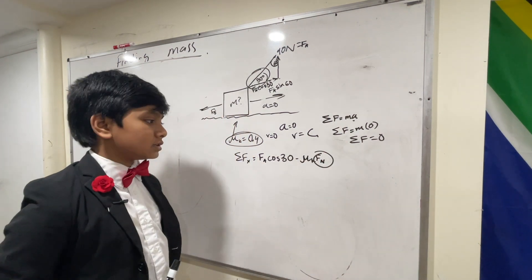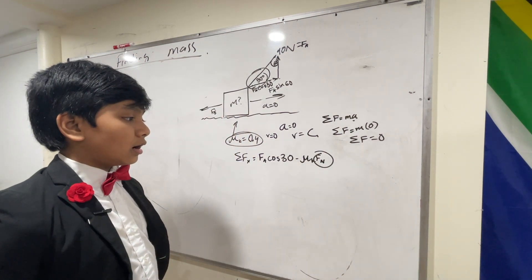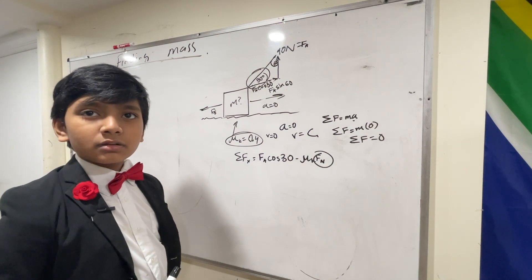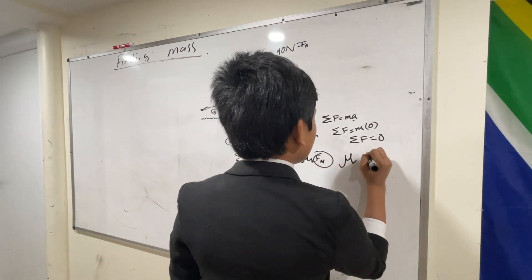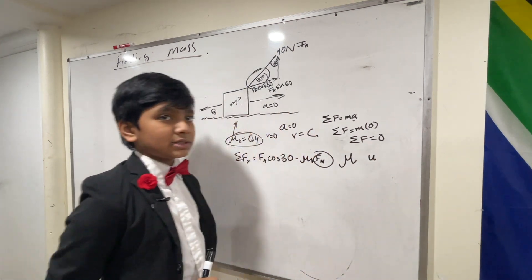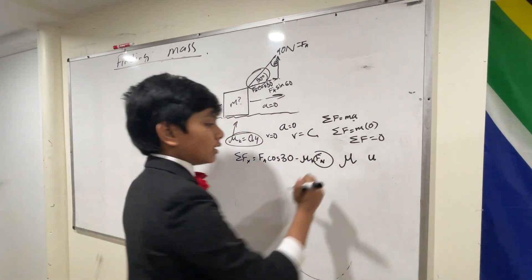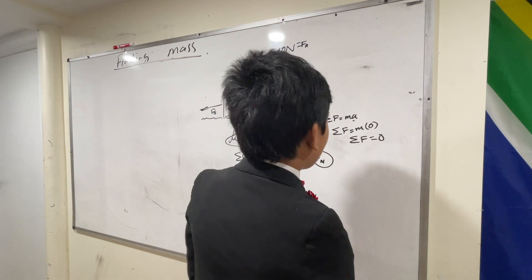What is the difference between mu k and u k? They look the same. Mu k and u k? Yeah. Mu looks like this, and u looks like this. So I wouldn't say they exactly look the same. And you don't use u k anywhere in physics.